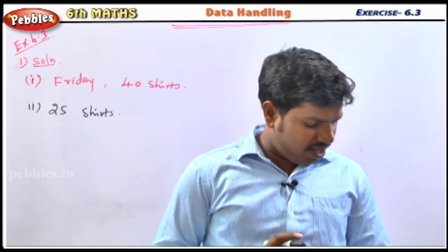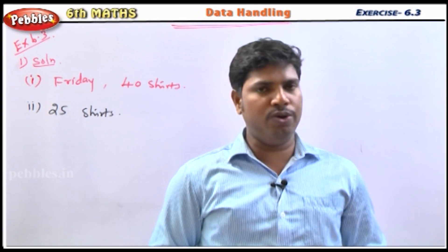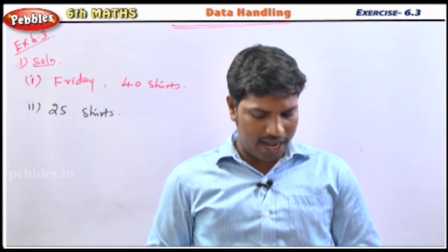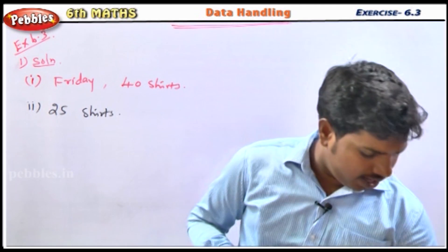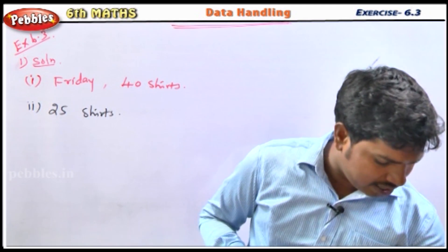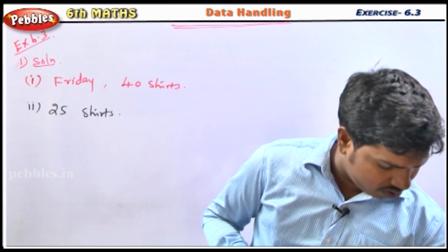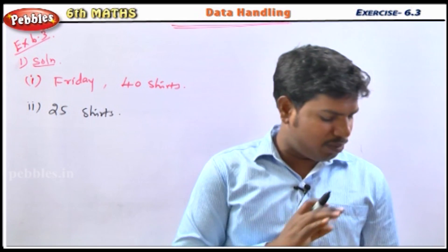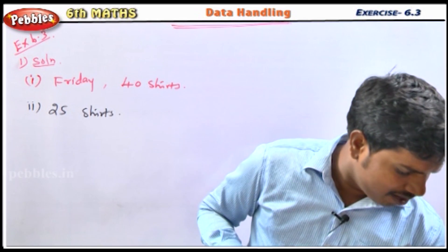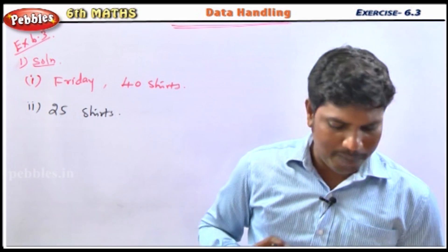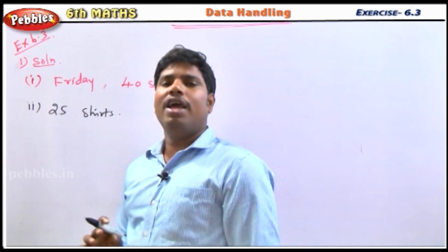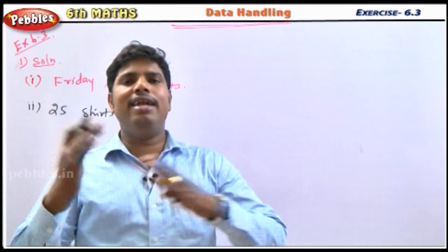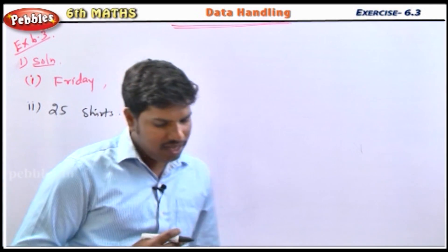The third question: on which day of the week were an equal number of shirts produced? If you check the bar diagram, you will see equal numbers of shirts were produced on Monday and Saturday.